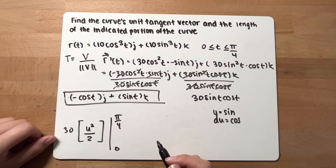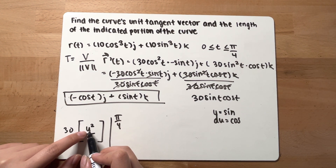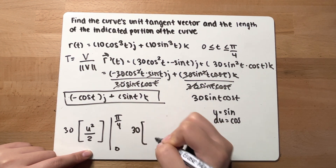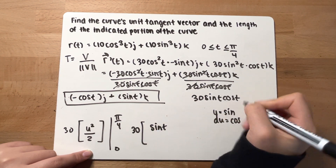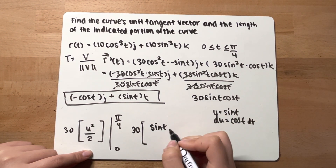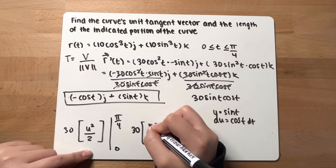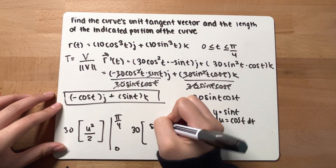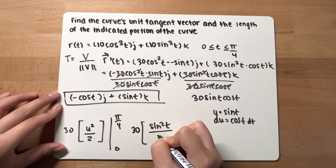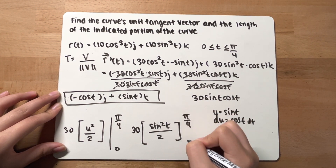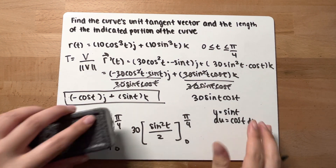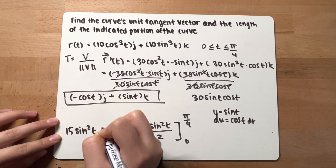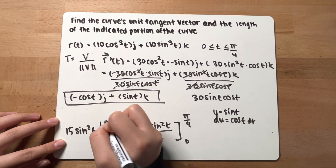We still have u in the expression, so plug sine t back in for u. This gives 30 times sine squared t over 2, from 0 to pi over 4. Simplifying, 30 divided by 2 is 15, so you have 15 sine squared t evaluated from 0 to pi over 4.